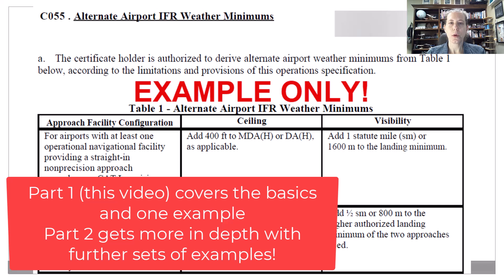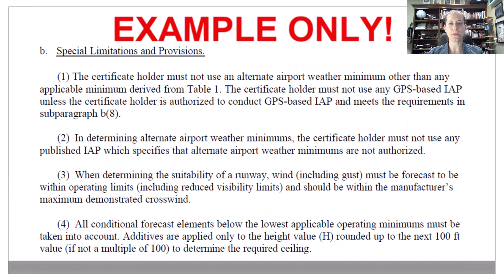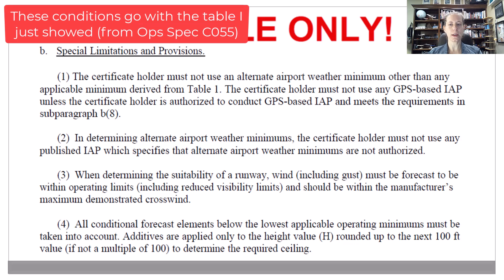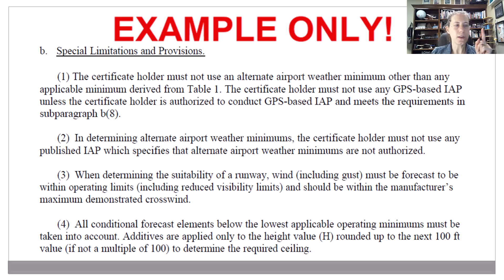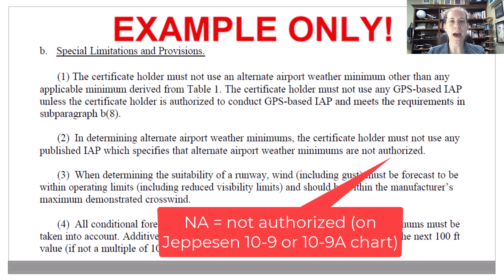We're going to unpack this. I want to go to the bottom part of C55 and look at some important notes you have to pay attention to. First off, note number two says that if you use the alternate airport weather minimums, you can't use approaches where alternate minimums are listed as not authorized.